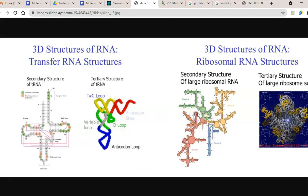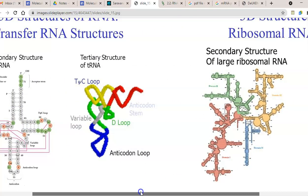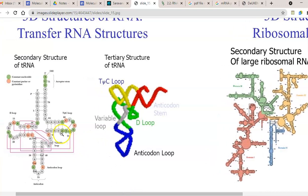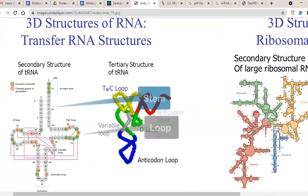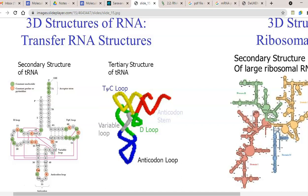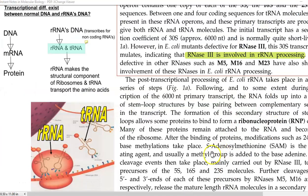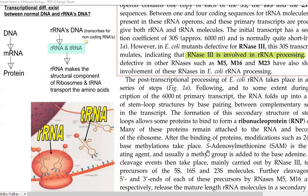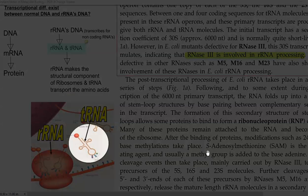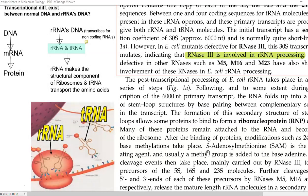tRNA and rRNA in their primary structure will be present as a linear molecule. However, complementary bases present will help in a double-stranded-like formation, referred to as secondary structure. The rRNA can form a lot of secondary structures in a stem and loop configuration. These kinds of secondary structures commonly exist in nature for both tRNA and rRNA molecules. The rRNA plays a structural component role in the ribosomes, and the tRNA is the one which transports amino acids during the process of translation.